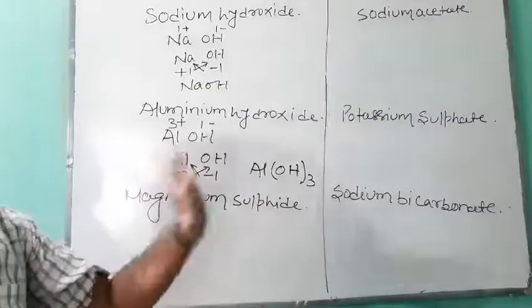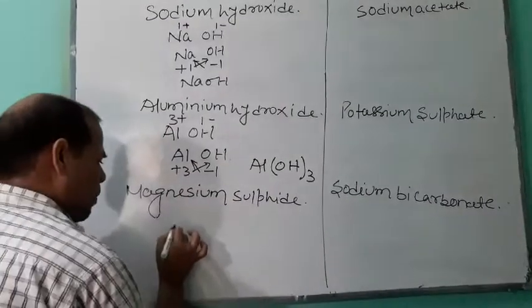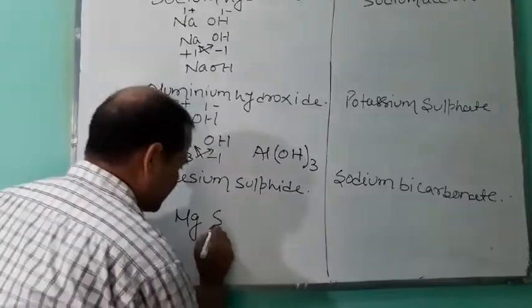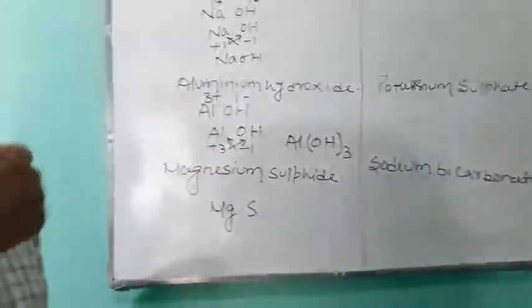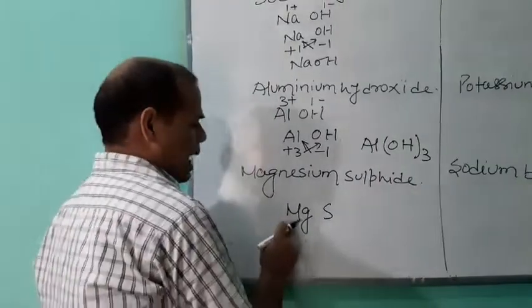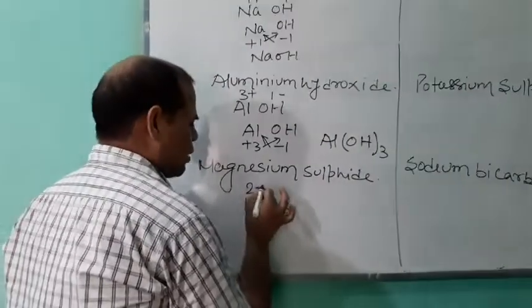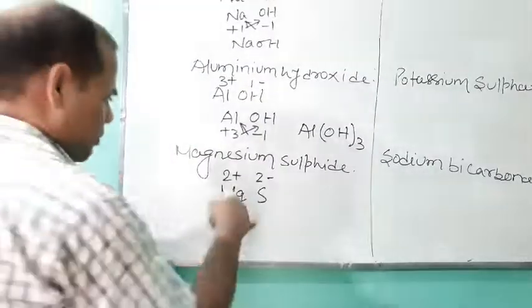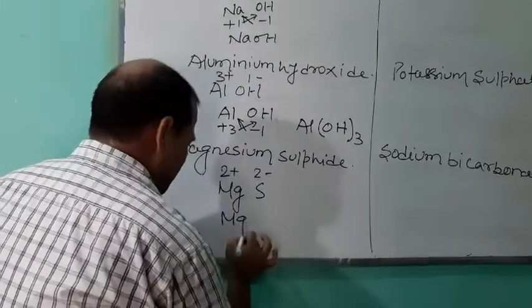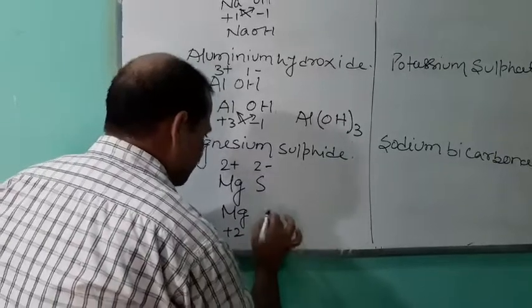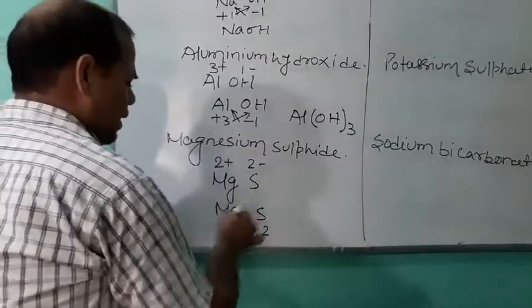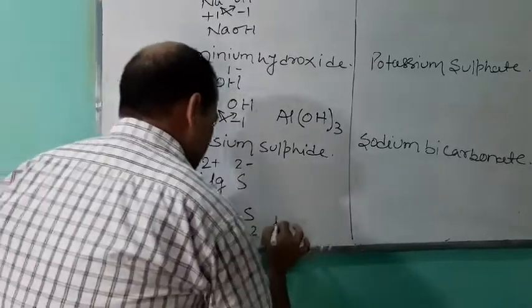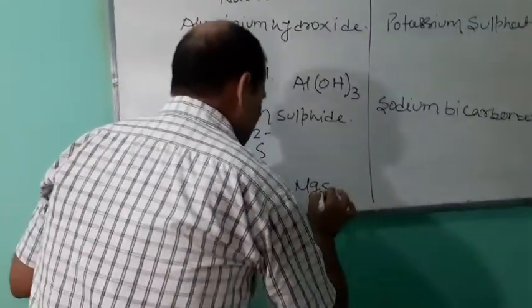Magnesium sulfide. Symbol of magnesium is Mg; sulfide is S. Magnesium has two units of positive charge; sulfur has two units of negative charge. Write Mg, S, plus two, minus two, and cross each other. The formula becomes MgS.